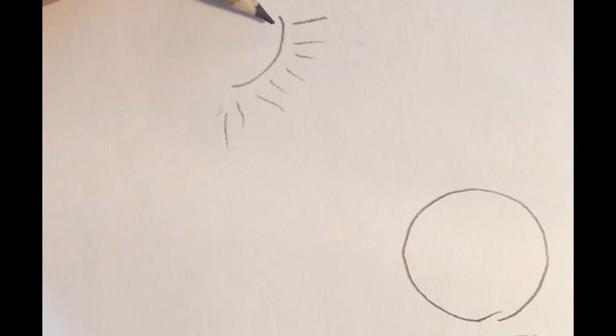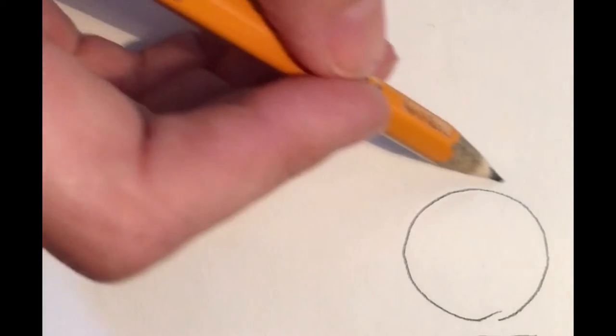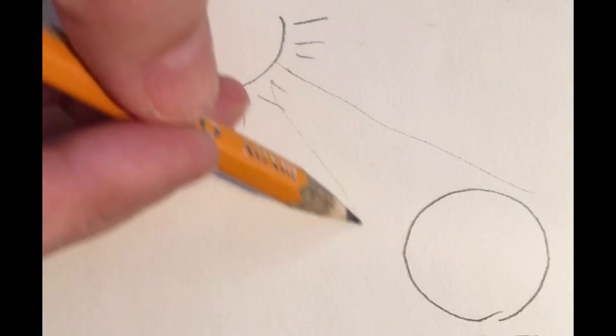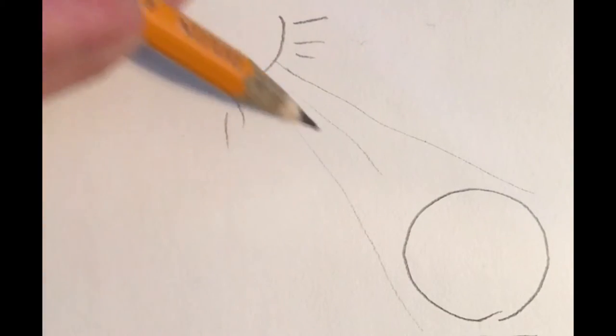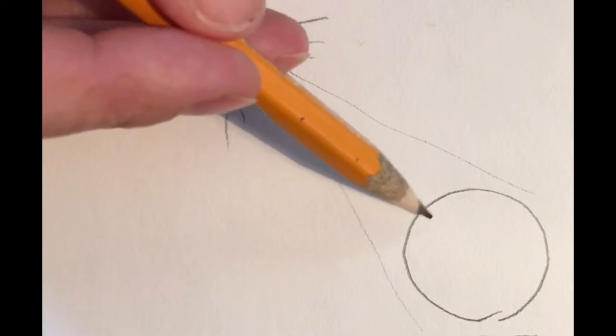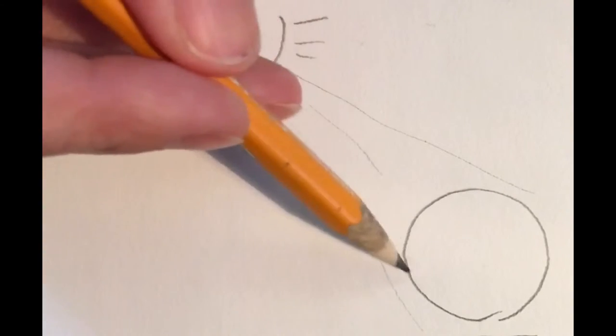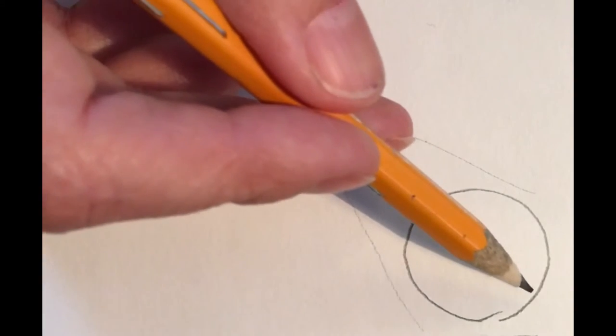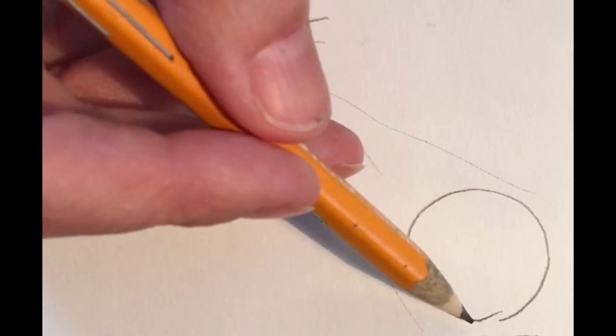Where is that Sun going to hit and make light on the object, and where is the Sun not going to hit? So we have the Sun coming down and it's hitting this part of the ball. That part is going to be light, bright. The other side is going to be in shadow because the Sun is not hitting it.